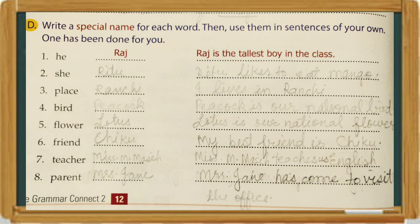Flower — Lotus. Lotus is our national flower. Friend — Chiku. My best friend is Chiku. Teacher — Mrs. Andrai. Mrs. Andrai teaches us English. Parent — Mrs. Jane. Mrs. Jane has come to visit the office.